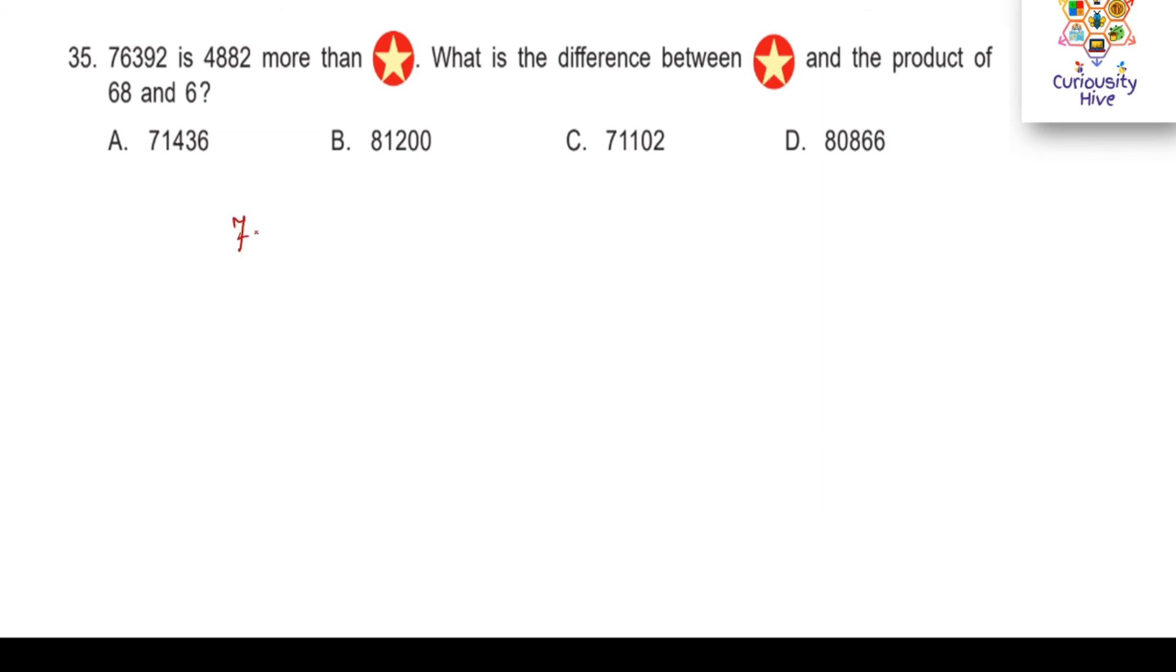It says 76,392 is 4,882 more than star. That means star plus 4,882. I can easily get my star which will be equal to 76,392 minus 4,882. Let me quickly subtract this. I get my star to be equal to 71,510.